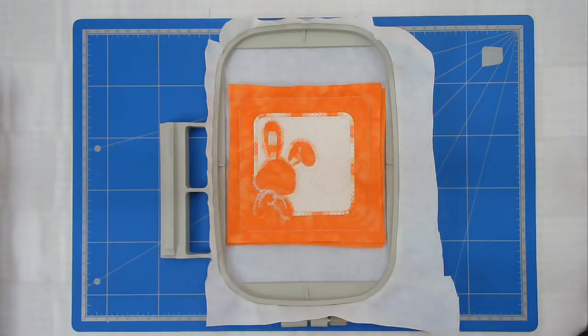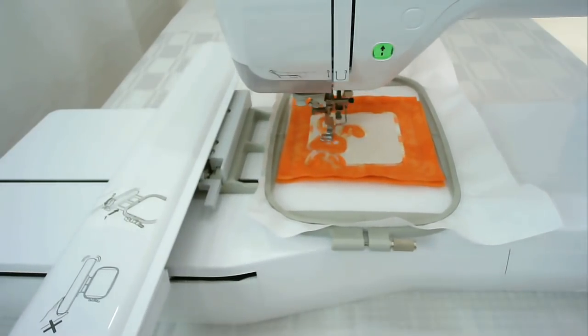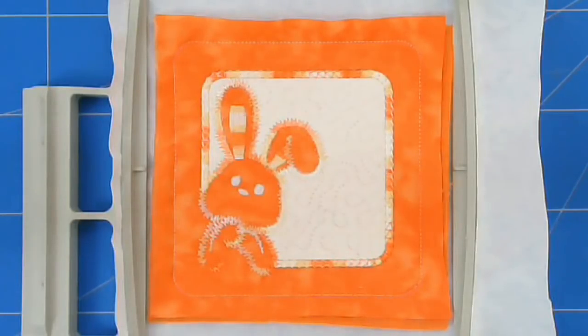I've loaded some white into my machine and next I'm going to stitch round number six which is going to do the whites of the eyes. So that's the white of the eyes done and the nose as well.